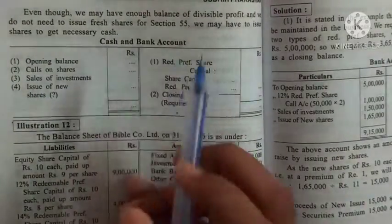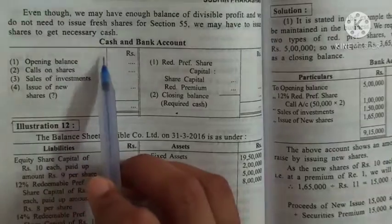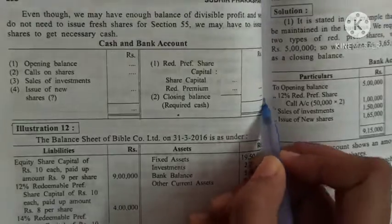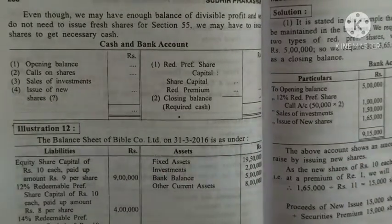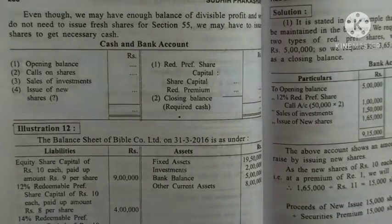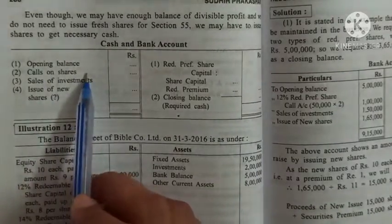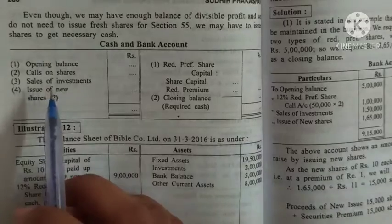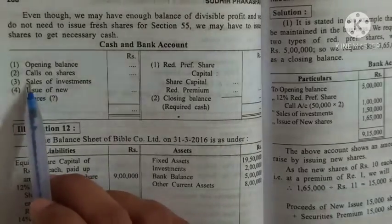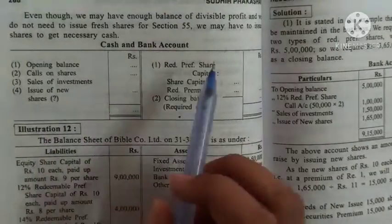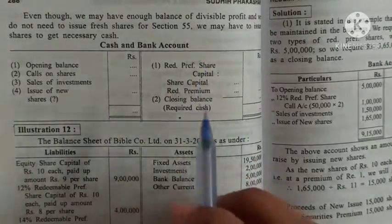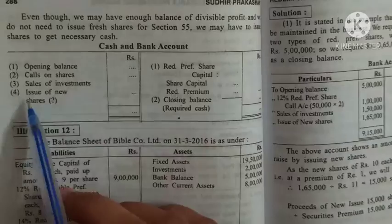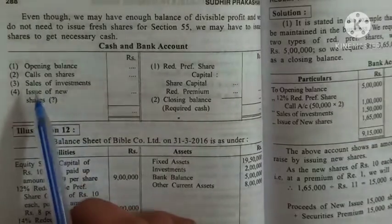The basic format of the cash or bank account: opening balance we will write on one side and closing balance — the required cash — we will write on the other side. If new shares or partly paid up shares are converted into fully paid up shares, those calls in arrears will be debited in the cash account. If investments are sold for the purpose of redemption, the cash received is debited as sale of investment. Then the actual amount payable to the preference shareholders including premium goes on that side, and the difference — that is the issue of new shares — we have to find out.